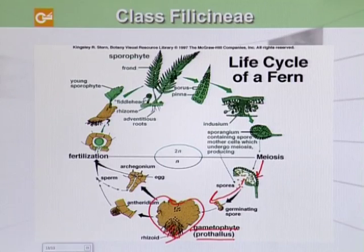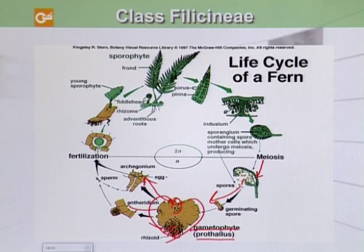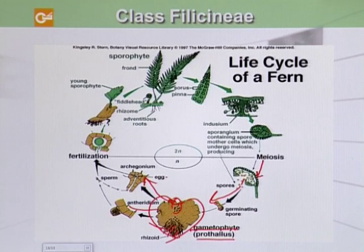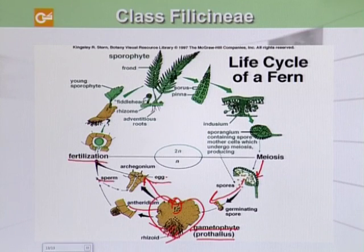On the top notch of the prothallus there are archegonia, and on the lower surface towards the rhizoids we have antheridia. The prothallus is monoecious, meaning the male and female structures are on the same structure. On favorable conditions and upon fertilization, the sperm will fuse with the egg and form a zygote, which then grows into a young sporophyte body.